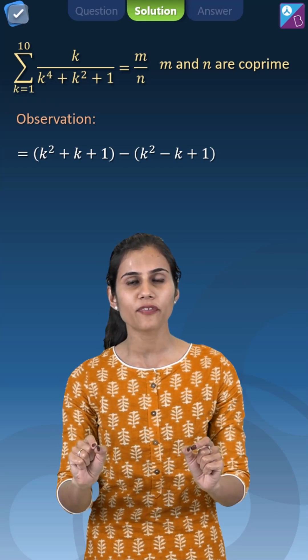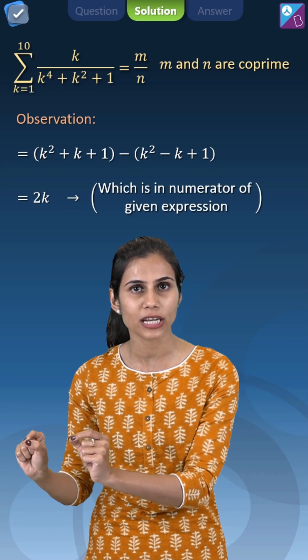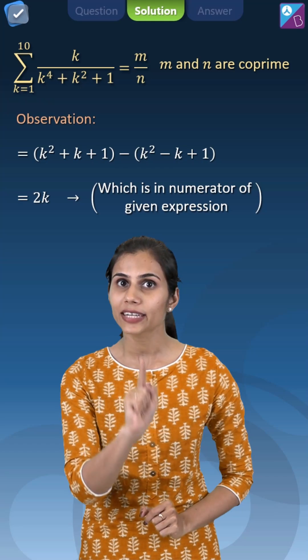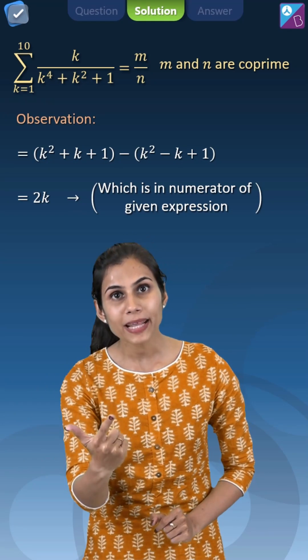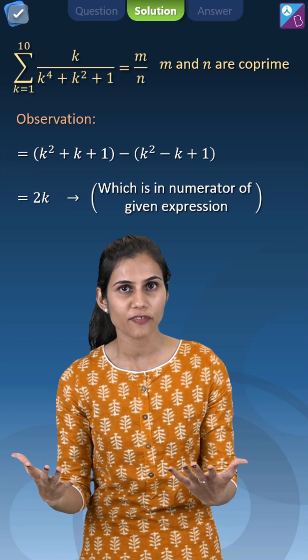Here when you subtract both the factors you will get a 2k as the outcome but in the numerator we just have a k. So multiply and divide by 2 and now replace this 2k with difference of both the factors.